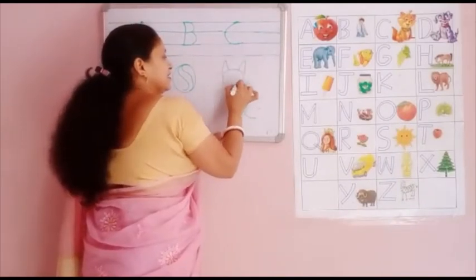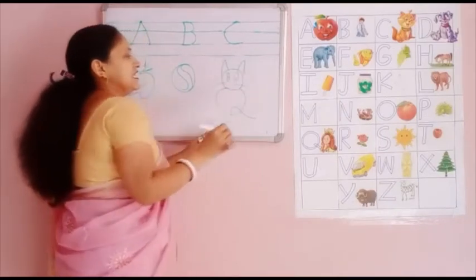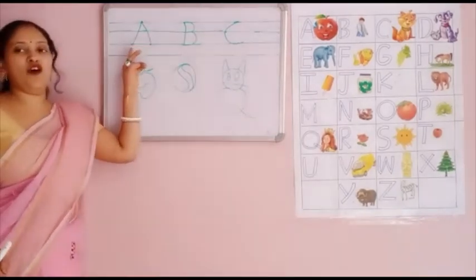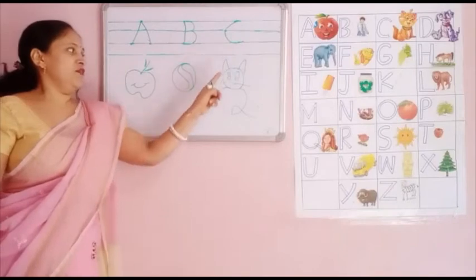Say ear. Eyes. C for cat. Now A for apple. B for ball. C for cat.